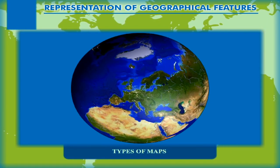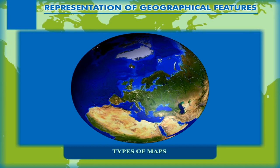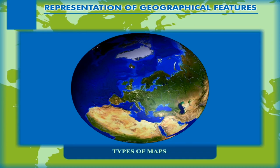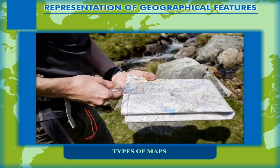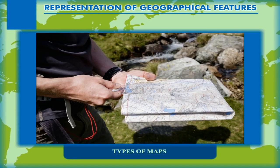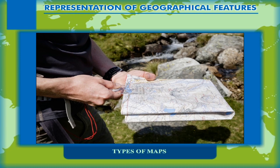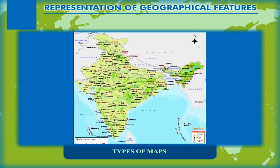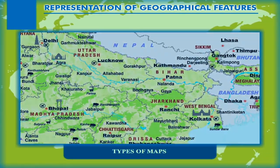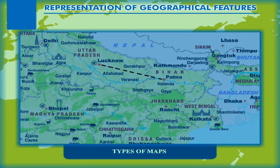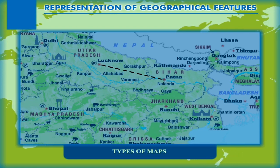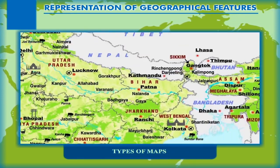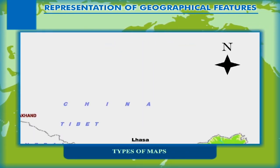The earth as a whole or any part of it cannot be drawn exactly the same size. Secondly, it is not always easy to know the correct direction of a place marked on the map. Thirdly, it would be difficult to know the exact distance between two points marked on the map. To solve these problems, each map has a scale and the direction north marked on it.